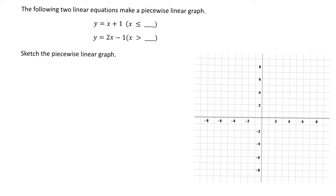The two equations we have been given are y equals x plus 1 and y equals 2x minus 1. If we look at the domains, which help us know where our intersection point is going to be, we can see that we haven't been given the domain. So we don't know where that point of intersection is going to be, which means we have to go ahead and calculate it.